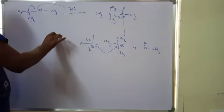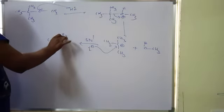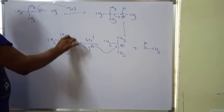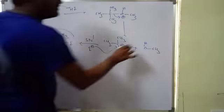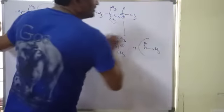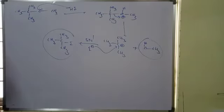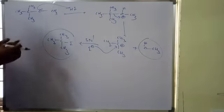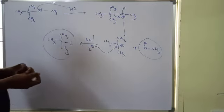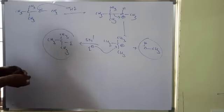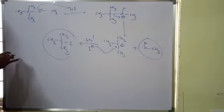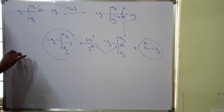SN1 mechanism takes place when tertiary butyl group is present. So the final products are: water, tertiary butyl iodide, and methanol are the products. When a tertiary butyl group is present on one side, it follows SN1 mechanism.